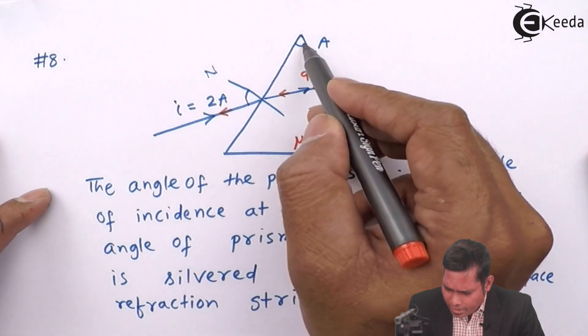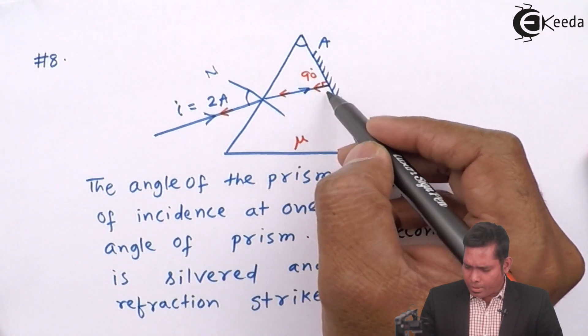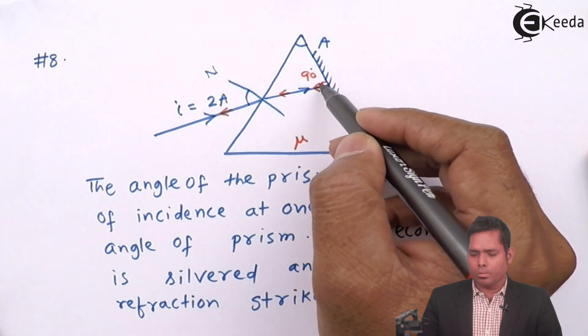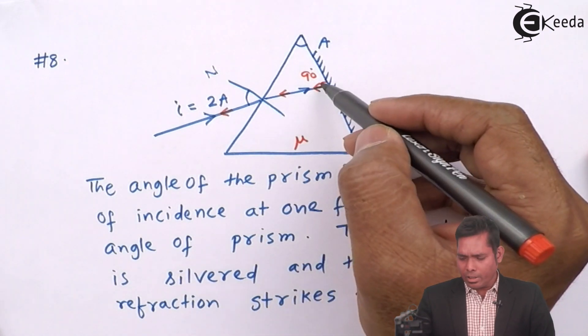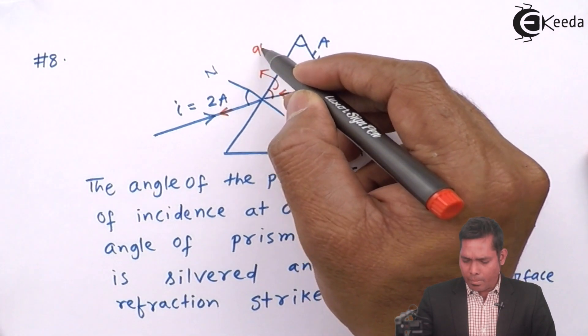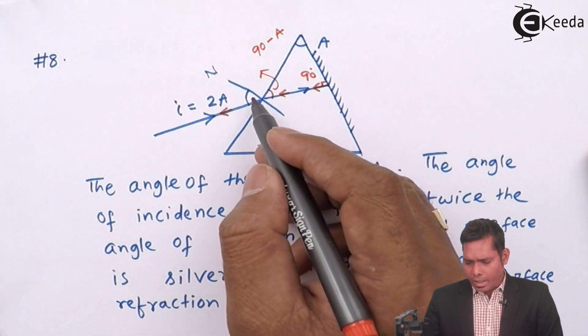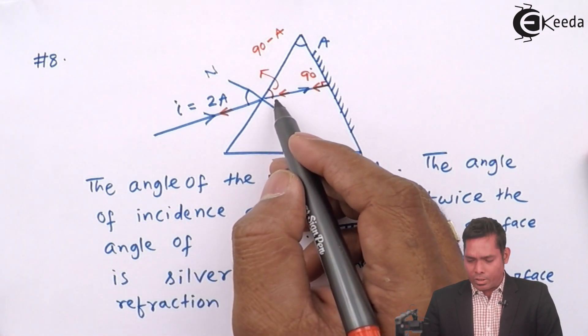This angle is double the angle of the prism. This strikes the surface and returns back in the same direction. So this angle has to be 90 degrees. This is 90. This is A. So this angle has to be 90 minus A. This angle is 2A.